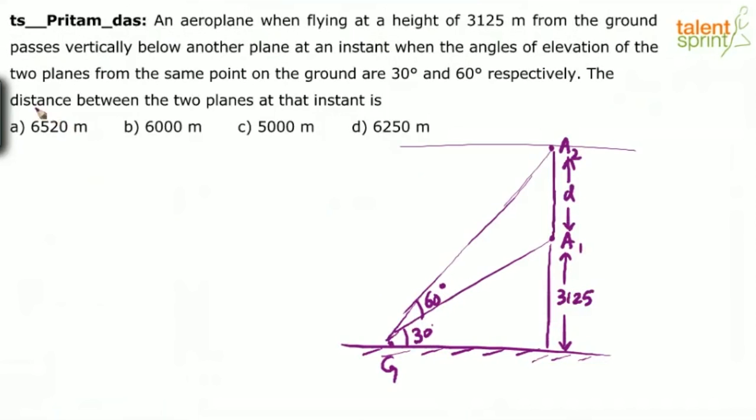He is asking us to find the distance between the two planes at that instant. D equals what? Now there are two triangles. We can apply tan theta in both triangles and find the distance D. For example, let's say this is G'. If you consider the triangle G' A1, what do we see? Tan 30 degrees, which equals tan theta, is opposite side by adjacent side. So 3125 divided by, let's assume the distance here is X.